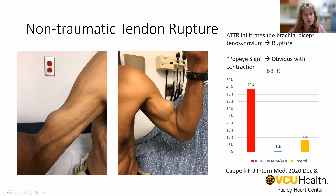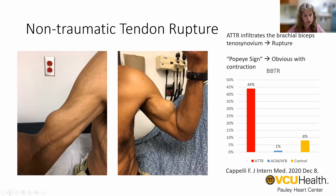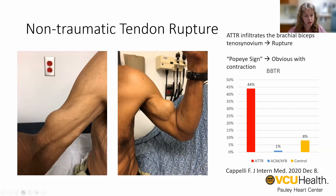Another place that TTR amyloid likes to go is the tissue surrounding the brachial biceps. This can cause a non-traumatic bicep tendon rupture. Pictured here are two of our patients. When they contract their arms, you can see what we call the Popeye sign — this is actually a ruptured bicep tendon that is curled up in the arm. We can tell it's not a bicep muscle because these patients otherwise have evidence of muscle wasting.